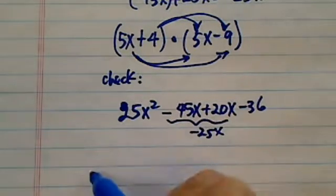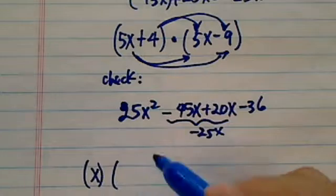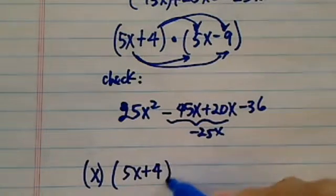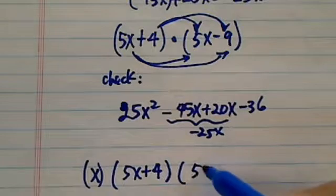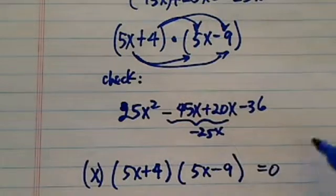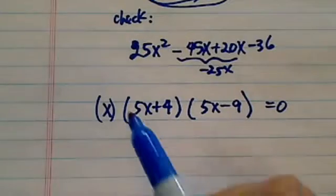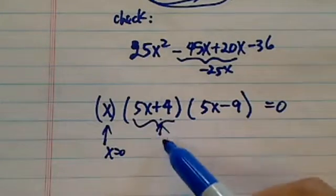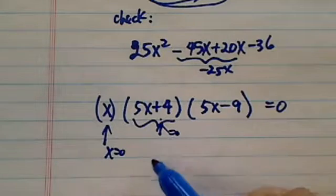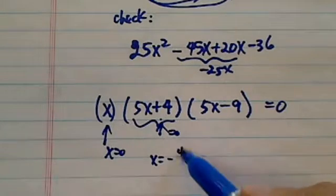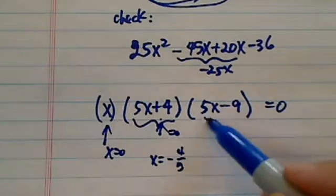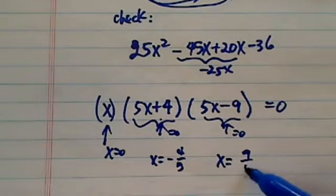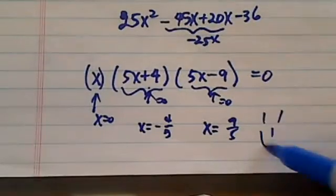So our original equation becomes x times (5x + 4) and (5x - 9) equal to 0. And from here you can solve by setting this one equal to 0 and set this chunk equal to 0. So you have x equals minus 4 over 5. And if you set this chunk equal to 0 then you'll have x equals 9 over 5. Alright. Have a confident day.